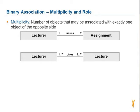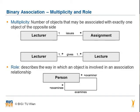A lecturer gives one or more lectures and a lecture is given by one or more lecturers. The role describes the way in which the object is involved in an association relationship. A person examines another person as an examiner, and the other way around the person is examined by another person. The role name is later translated into an attribute, as seen before in the Java code.